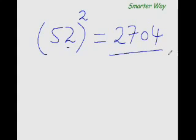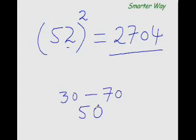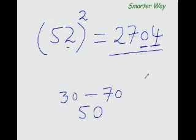Let me explain it in more detail. In order to find the square of any number closer to 50 — in this range, 30 to 70 — all we need to do is find out how much more or less than 50 that number is; that is, the distance from 50. So 52 is 2 more than 50, so add that 2 immediately to 25: 25 plus 2 is 27. For the last two digits, find the square of that distance — square of 2 is 4, so put 04 here.